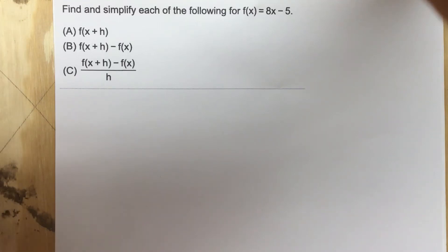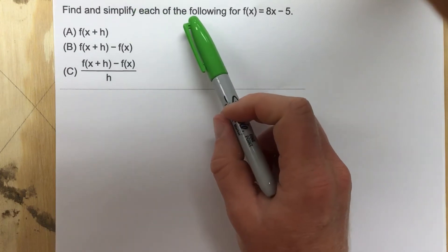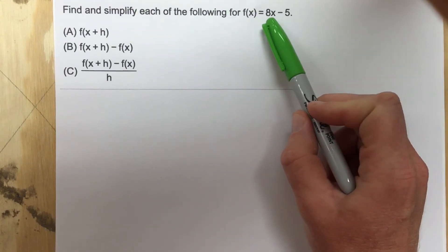This is problem number 4 from section 1.1, and this problem says find and simplify each of the following for f(x) equals 8x minus 5.